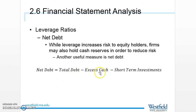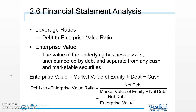To calculate net debt, we subtract any excess cash and short-term investments, since short-term investments are liquid enough to convert to cash at full value on short notice. Using this net debt concept — the debt that's truly at risk — we can look at the debt-to-enterprise-value ratio. Enterprise value is calculated as market value of equity plus net debt outstanding, that is market value of equity plus debt minus cash and cash equivalents.